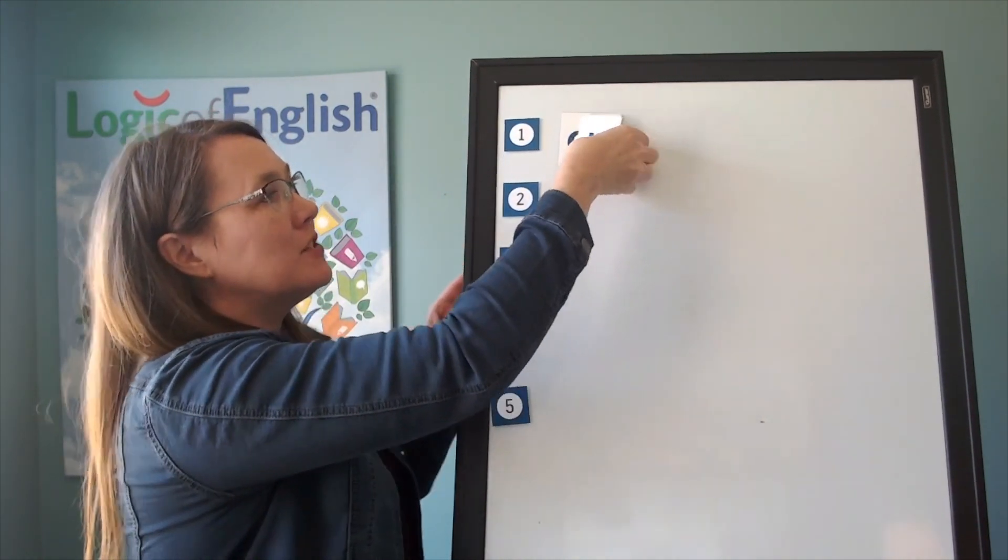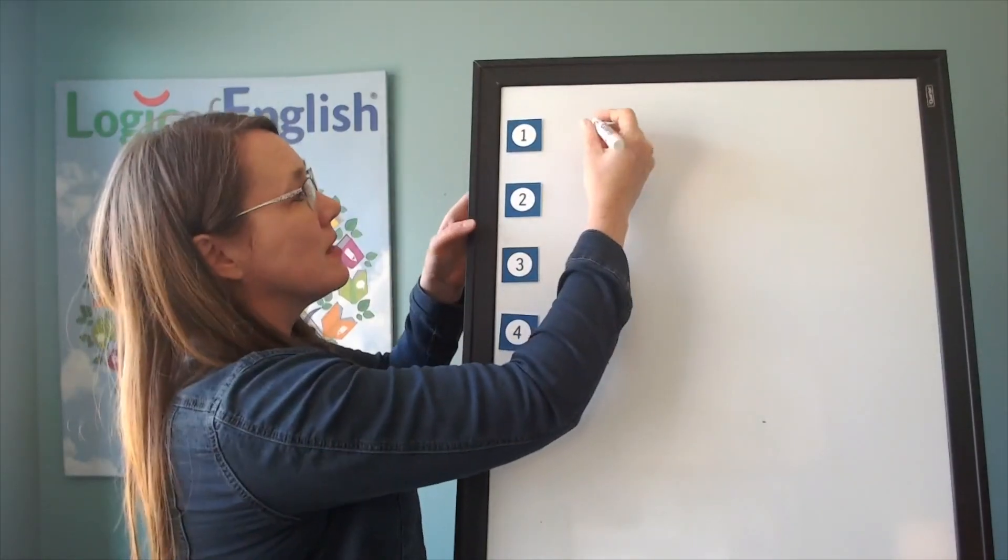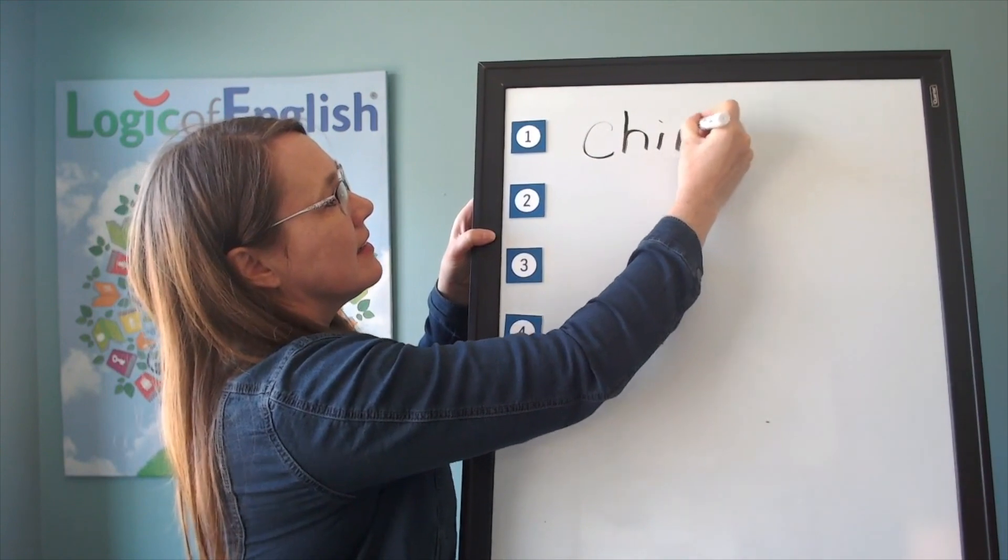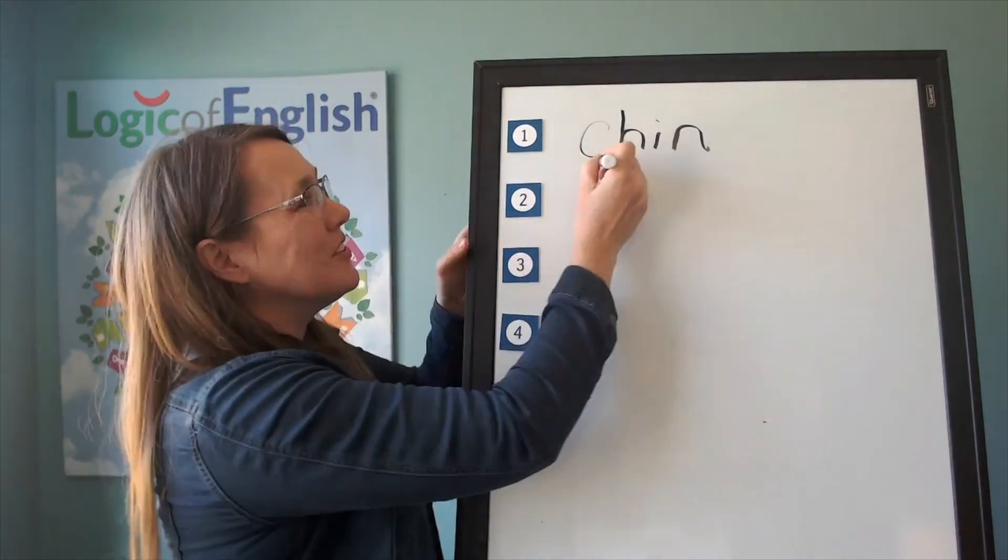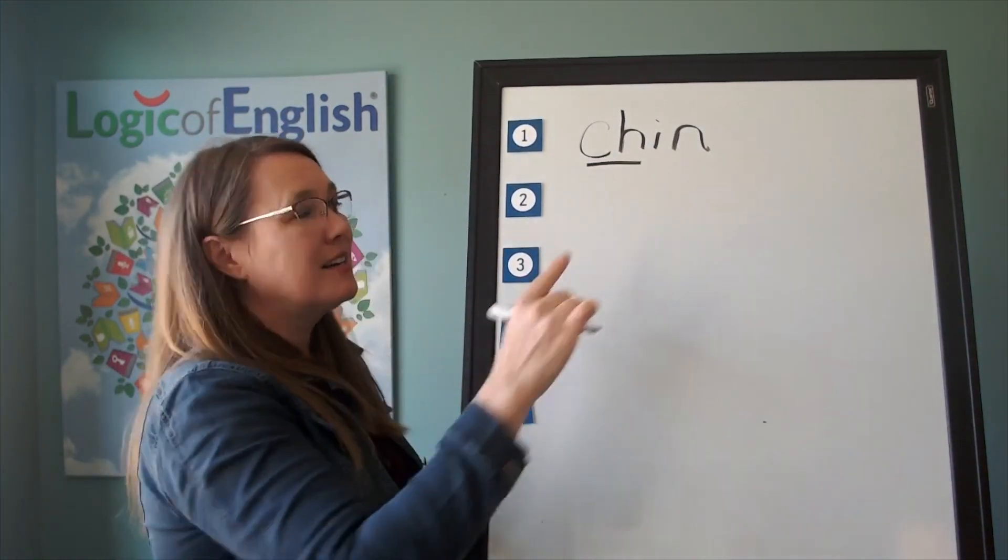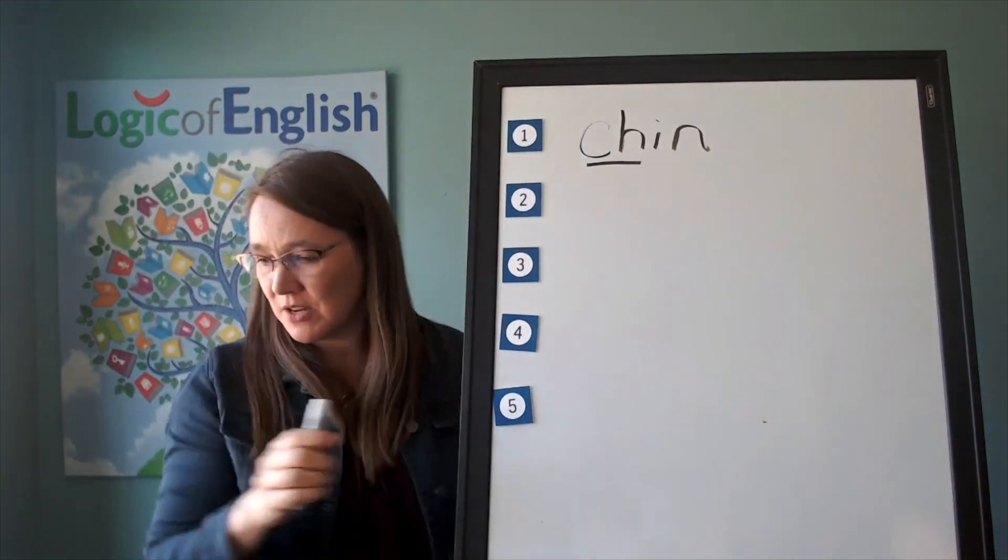Now help me to write it with my marker. Sound it out one more time. Ch-i-n. How will we mark chin? Well, underline the ch because it's spelled with more than one letter. Let's sound it out. Ch-i-n. Chin. Great.